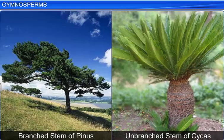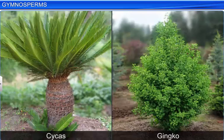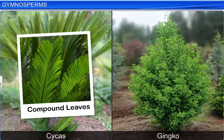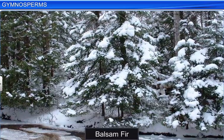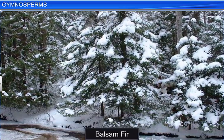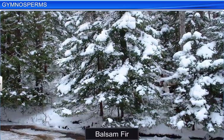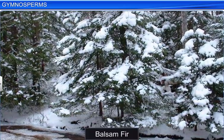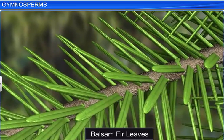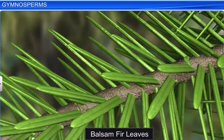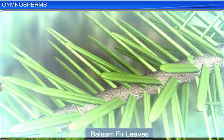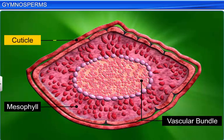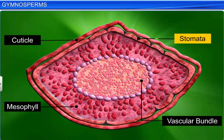The stems of a gymnosperm can be branched or unbranched, and the leaves can be compound as in Cycas or simple as in Ginkgo. Moreover, these leaves are well adapted to withstand extreme climatic conditions, as seen in balsam fir. Its needle-like leaves reduce the surface area, which in turn reduces loss of water due to transpiration. The thick cuticle and sunken stomata on the leaves also reduce the rate of water loss.